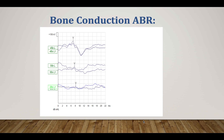This is a case of bone conduction ABR. There are some differences between bone conduction ABR and air conduction ABR. The bone conduction ABR frequency range is around 1.5 kHz, and there is also a latency shift compared to air conduction ABR.